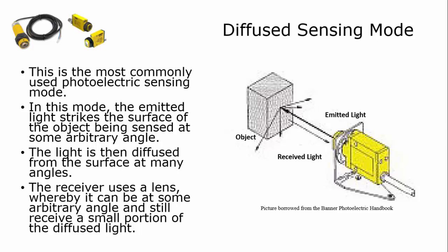In the diffused sensing mode, this is the most common mode used in sensing. The emitter and the receiver are in the same housing and the emitter sends out light that strikes the surface of the object being sensed. Once the light strikes the object, it is reflected off at all kinds of arbitrary angles. As long as some of that light gets back into the receiver, this sensor will see that the object is present.